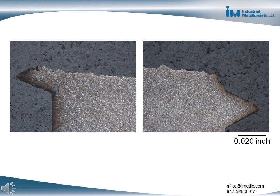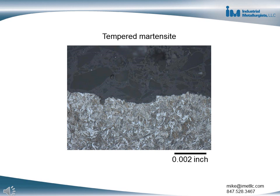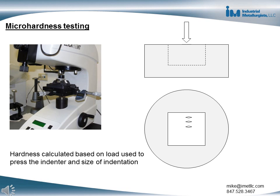These images of the etched sample show the metal along the fracture surface and below. This higher magnification image near the fracture surface shows tempered martensite, which was present throughout the entire sample. Martensite is a metallurgical phase in steel, and its presence indicated that the screw had been through-hardened by heat treating. Micro hardness testing involves pressing an indenter into the metal surface and measuring the indentation size. The consistent hardness measurements through the screw thickness confirmed that the screw had been through-hardened.